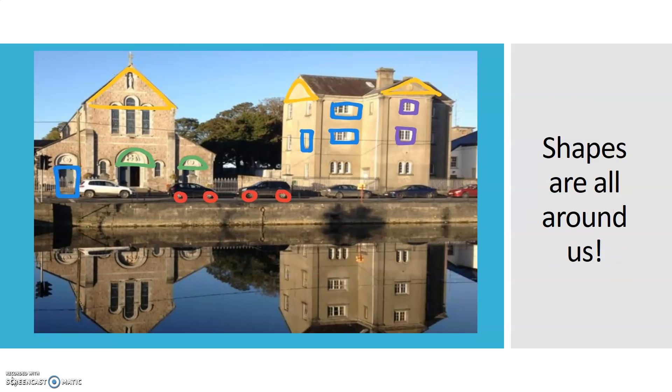Now look at all the shapes from the picture. As you can see, there are yellow triangles at the top of the buildings, green semicircles at the top of the arch of the doorway, circles for the tires, and rectangular shaped windows and also square windows.